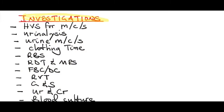Investigations for a septic miscarriage: do a high vaginal swab for microscopy, culture and sensitivity. Do a urinalysis — not diagnostic, but it will show leukocytes, protein, and nitrites, indicating genital infection. Do a urine microscopy, culture and sensitivity, as some microorganisms come from the urinary tract. Do a clotting time to check for disseminated intravascular coagulation, and a random blood sugar, as sepsis can cause hypoglycemia.